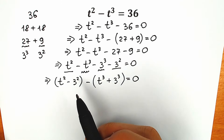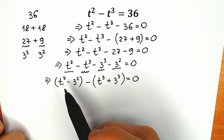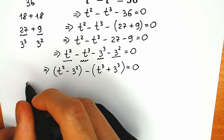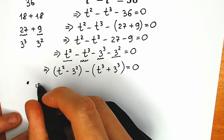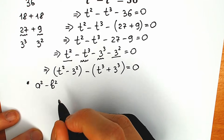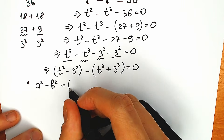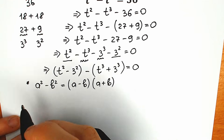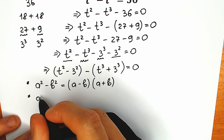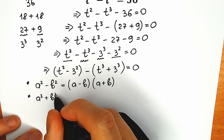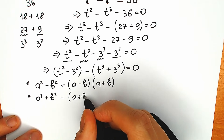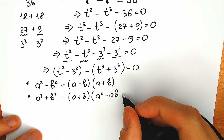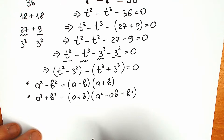The next step is a little bit different. We have a difference of squares and a sum of two cubes. Let me write these formulas here. The difference of squares: a squared minus b squared equals (a minus b)(a plus b). The sum of two cubes: a cubed plus b cubed equals (a plus b)(a squared minus ab plus b squared).